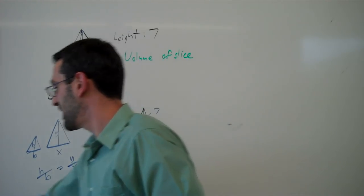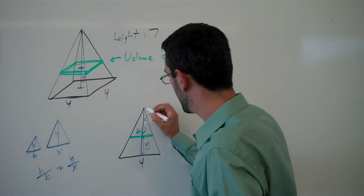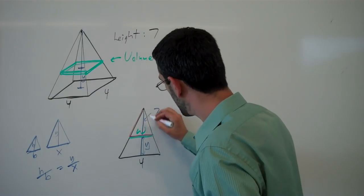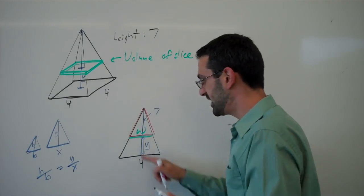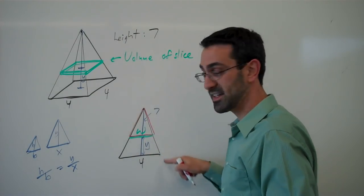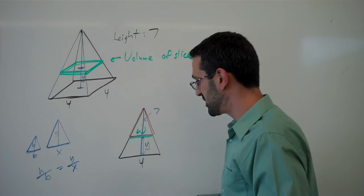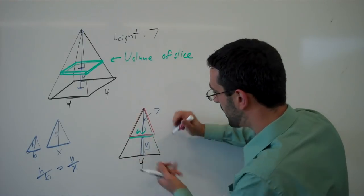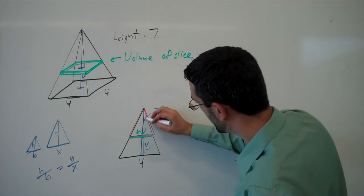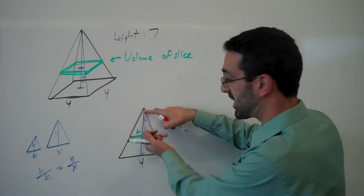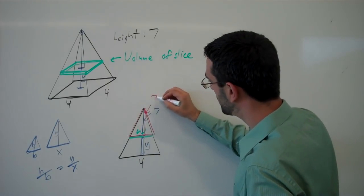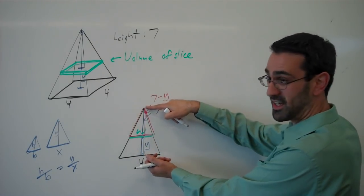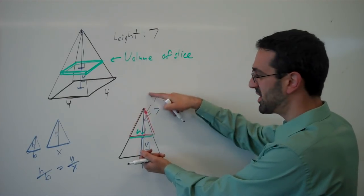So in this case, we have a similar triangle here. This small triangle here has the same angles as the large triangle, which means we can relate the two. If this length is y, then this length here, the height of the small triangle will be seven minus y. The total height is seven. This part is y. So seven minus y gives me seven minus y for the height there.